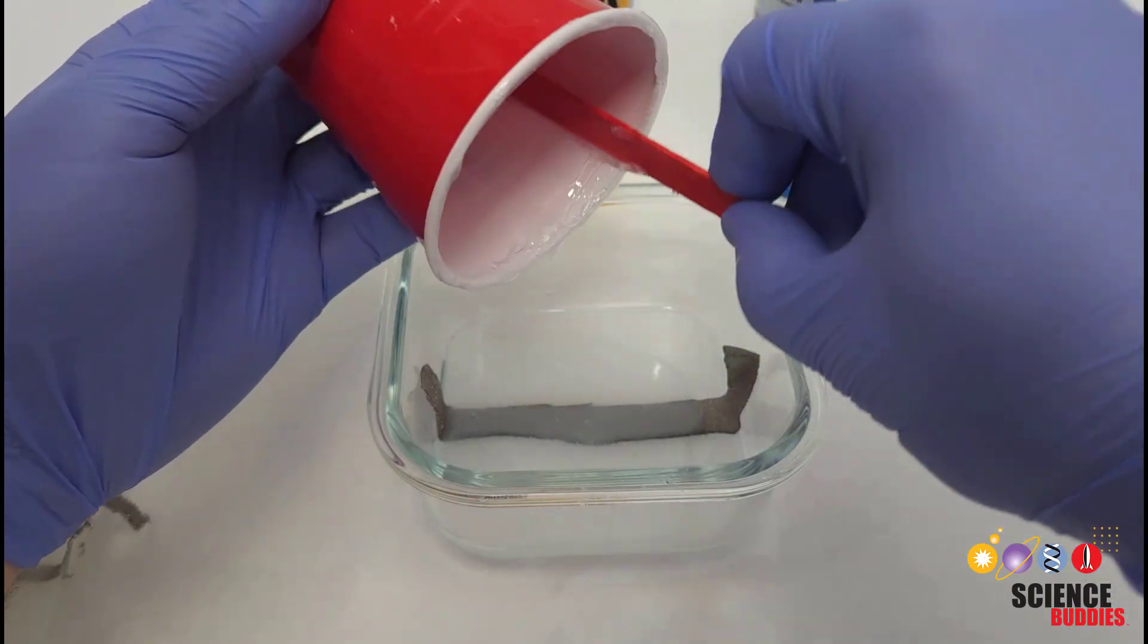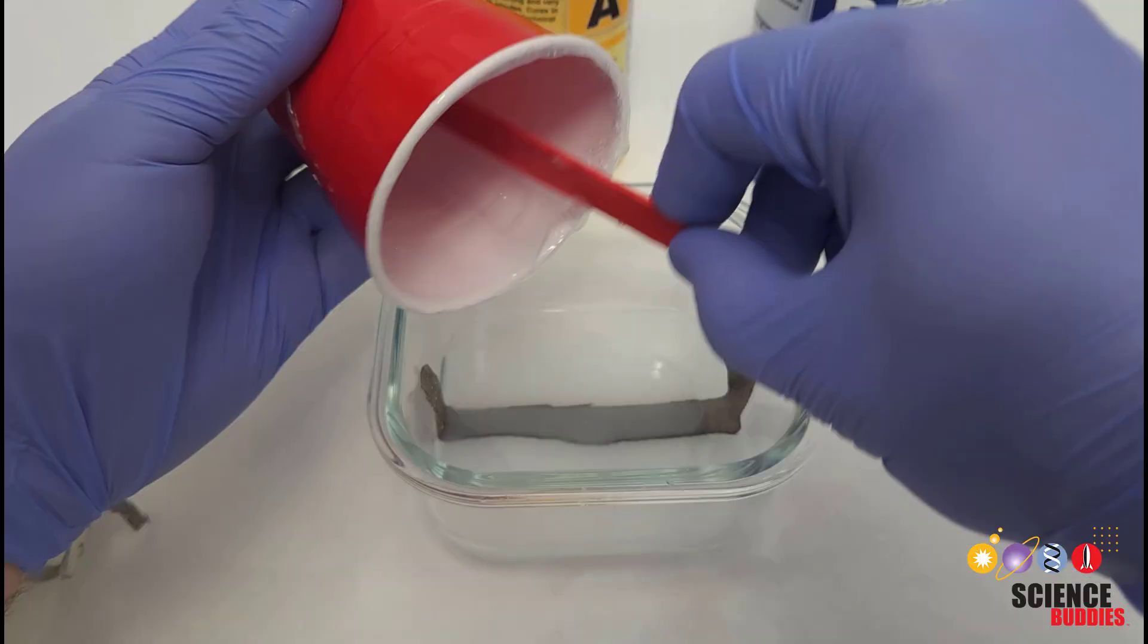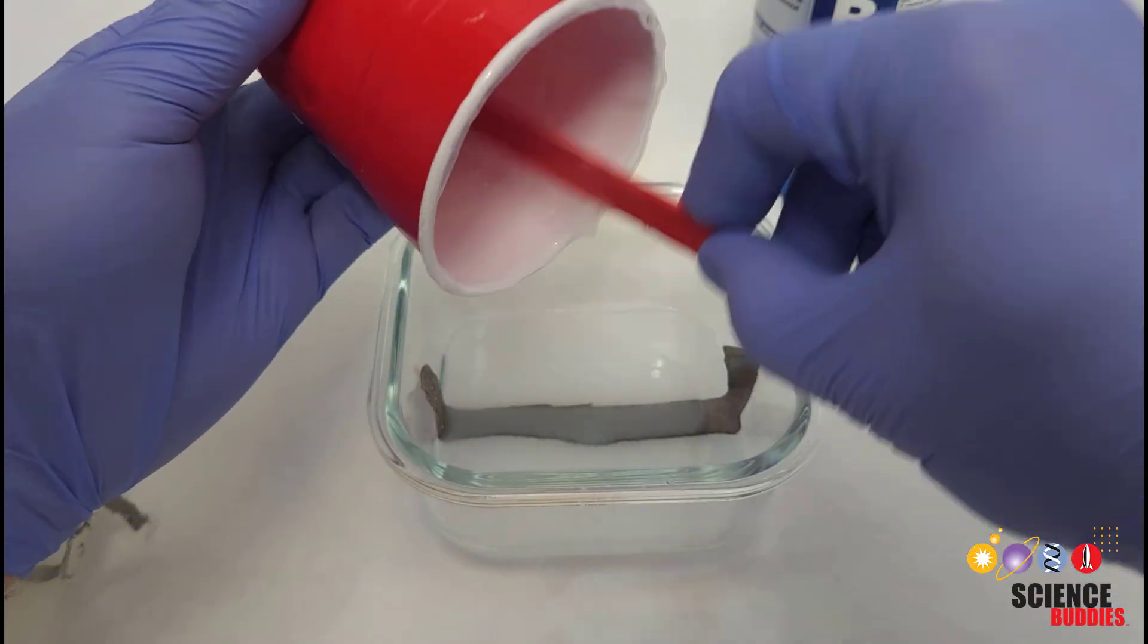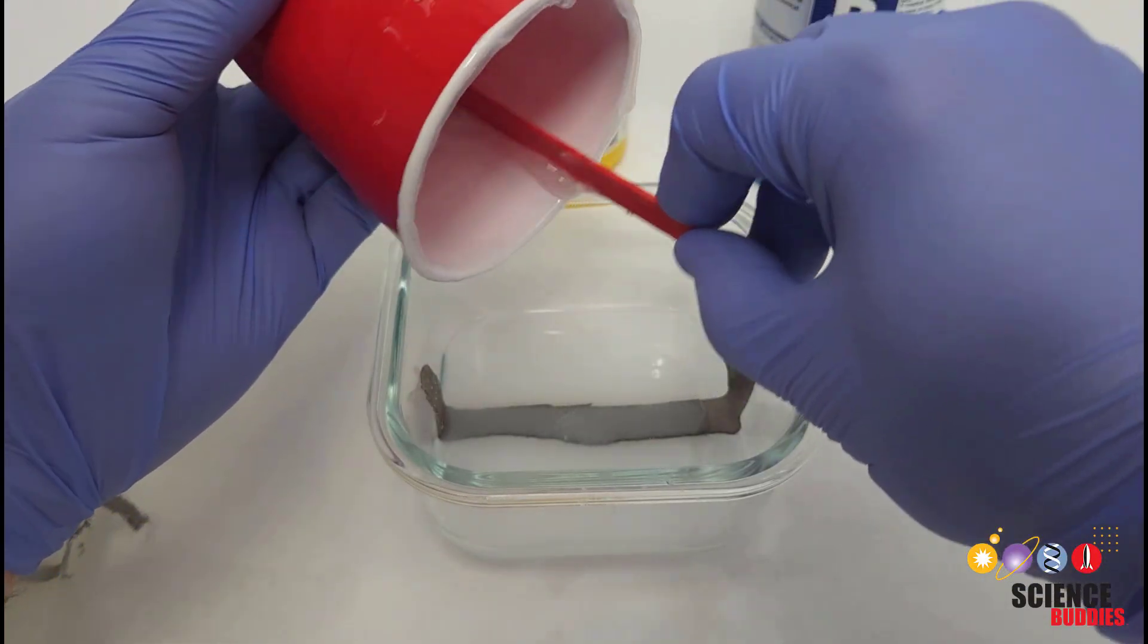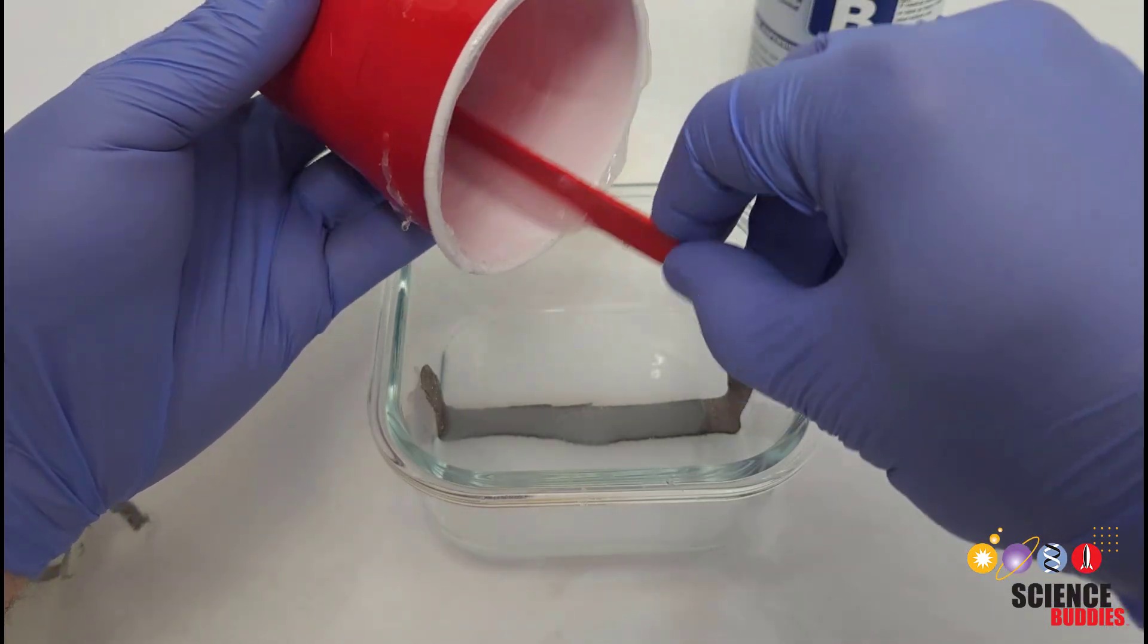So once you have poured that second layer on, same process, you're going to need to wait another four hours for that to cure or solidify completely. And then we'll come back and be able to remove the sheet from the tray.